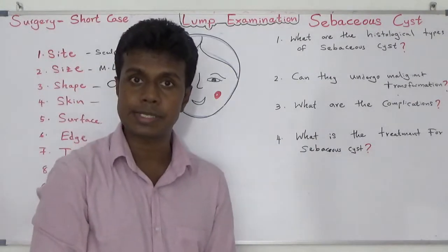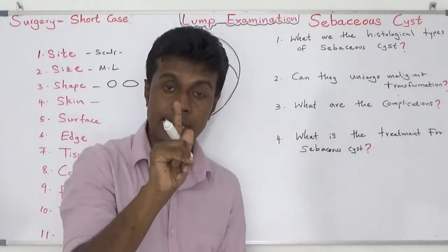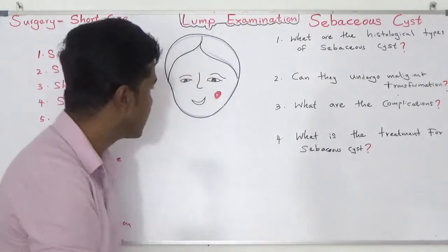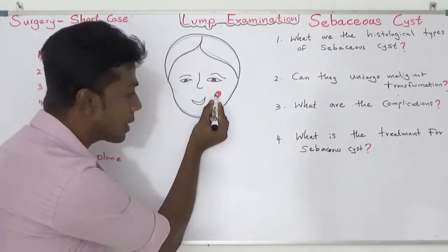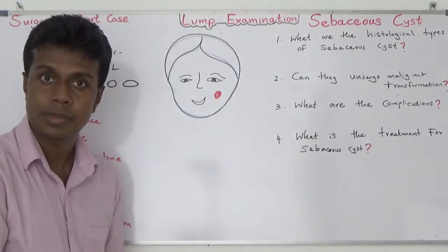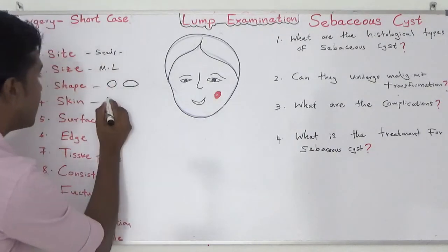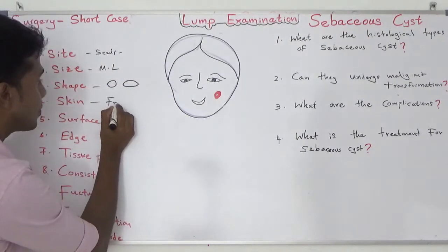In 50% of cases there will be a punctum — a small opening you can see on the surface. That small opening is called the punctum.